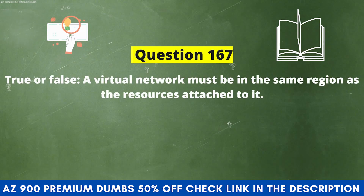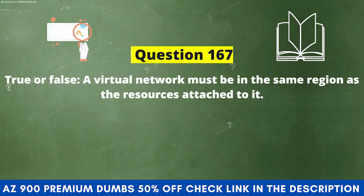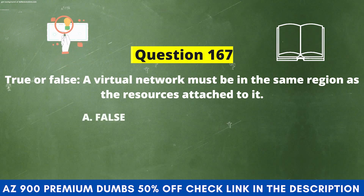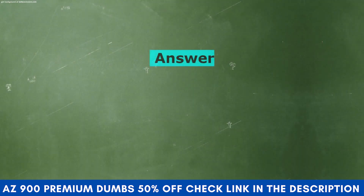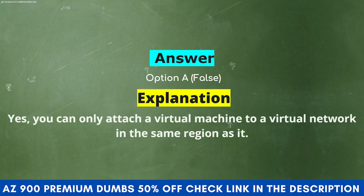True or false? A virtual network must be in the same region as the resources attached to it. Option A: False. Option B: True. The correct answer is Option A, False. Yes, you can only attach a virtual machine to a virtual network in the same region as it.